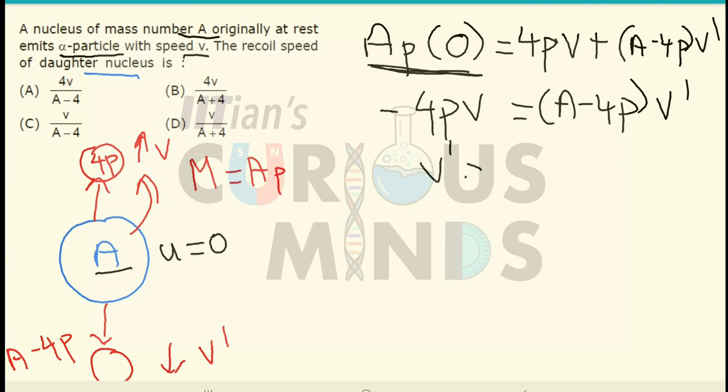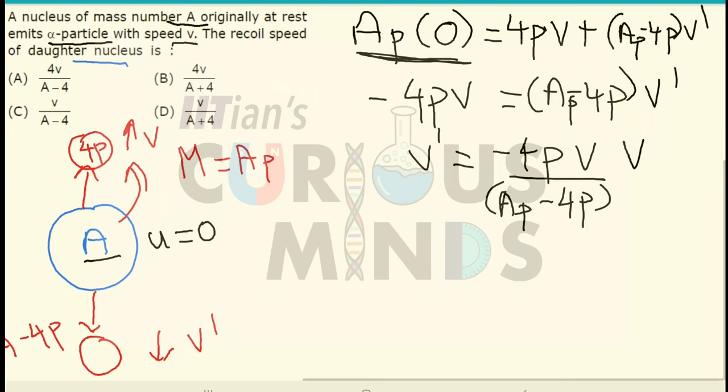So V dash will come out to be minus 4P into V divided by the mass over here AP. I can write this as AP minus 4P. V will get cancelled out. So P will get cancelled out from the numerator and the denominator.